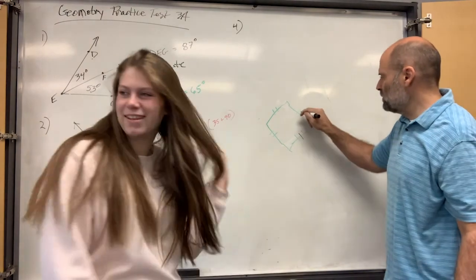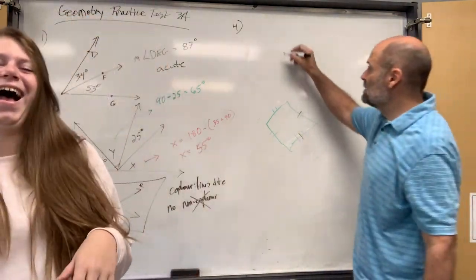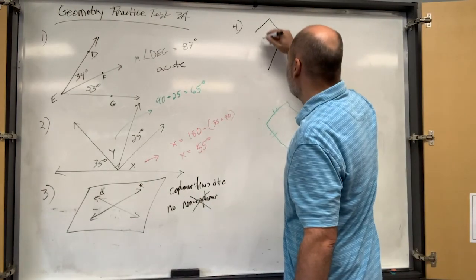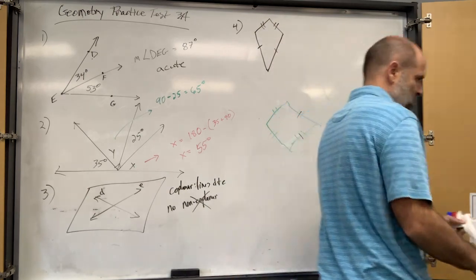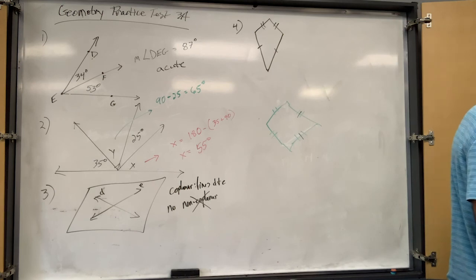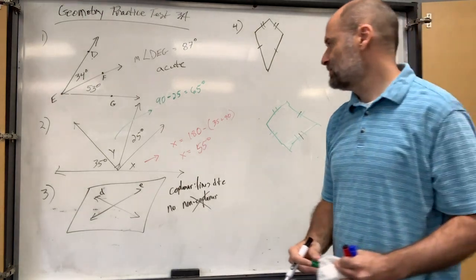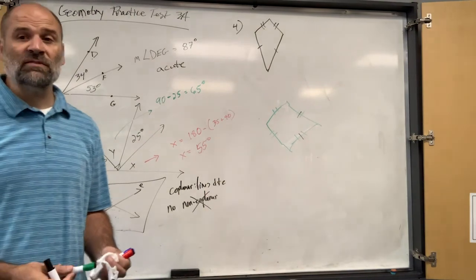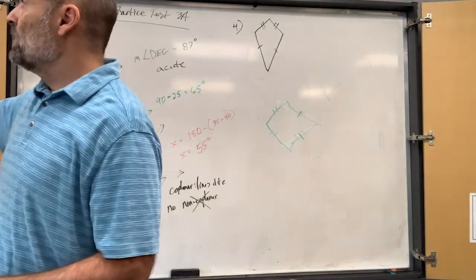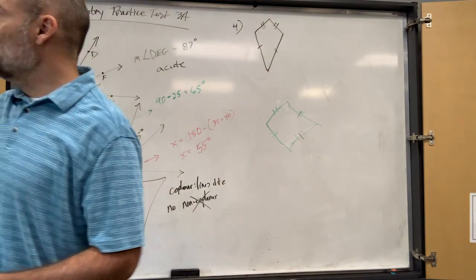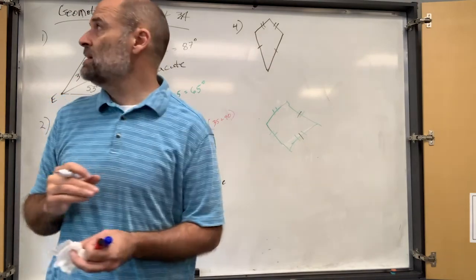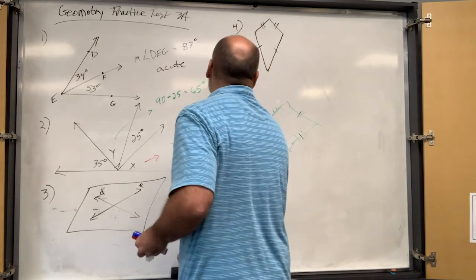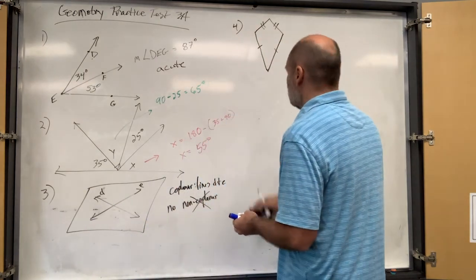The counter-example is actually called a kite. This is two pairs of congruent sides. If I had said two pairs of opposite congruent sides, then yes, it would be a parallelogram. But a kite has consecutive congruent sides and is not a parallelogram.